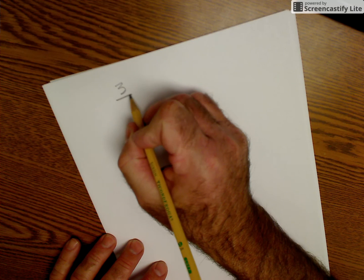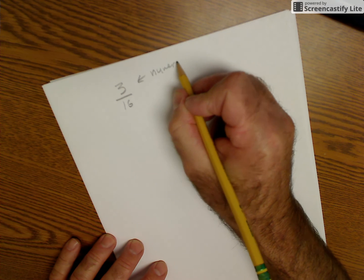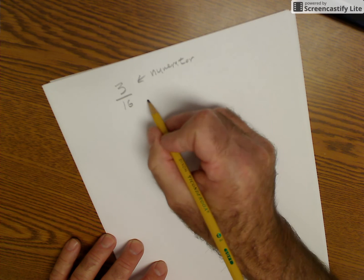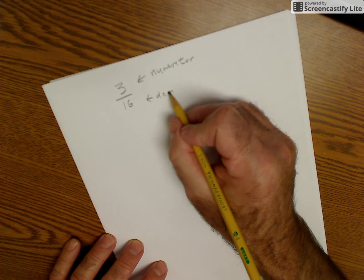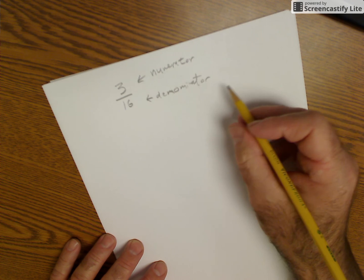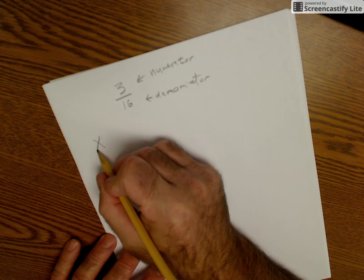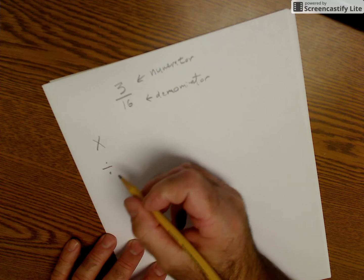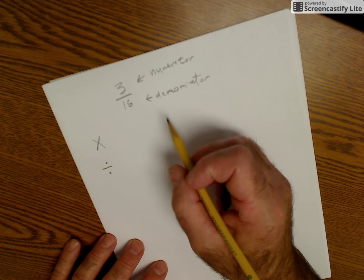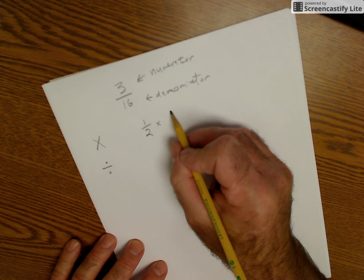Now let's take a look at multiplying and dividing. So again, in my fraction, let's say I have 3/16. The top is my numerator, the bottom my denominator. And to add and subtract, I need a common denominator. However, in multiplying and dividing, I do not. So multiplying and dividing, I don't need a common denominator.